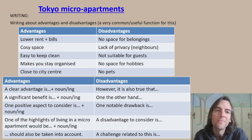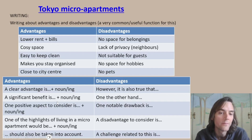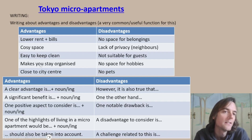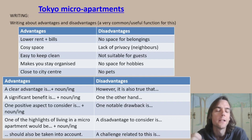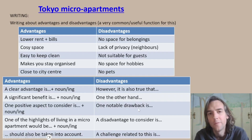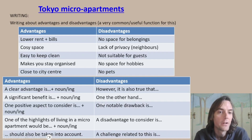Here are some ideas: advantages include lower rent, cozy space, easy to clean, and location. Disadvantages include no space, no privacy, no guests, no hobbies, and no pets. I'm also giving you some phrases: 'A clear advantage is paying lower rent' — it's the -ing form because the verb acts as the object of the sentence. 'A significant benefit is...' Positive aspect, highlight, taken into account. On the other hand: drawback, disadvantage, a challenge — all useful phrases for advantages and disadvantages.